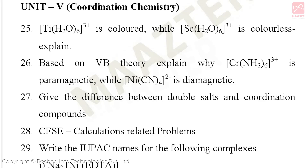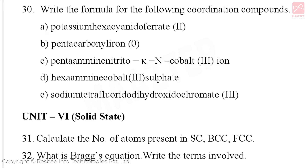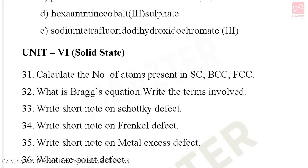Unit 5: Coordination Chemistry. Important questions: why is [Ti(H₂O)₆]³⁺ colored while [Sc(H₂O)₆]³⁺ is colorless — explain. Based on VB theory, explain why [Cr(NH₃)₆]³⁺ is paramagnetic while [Ni(CN)₄]²⁻ is diamagnetic. Difference between double salt and coordination compounds — very important. Crystal field stabilization energy calculation — very important. Given a complex, write its IUPAC name, and given an IUPAC name, write the formula.